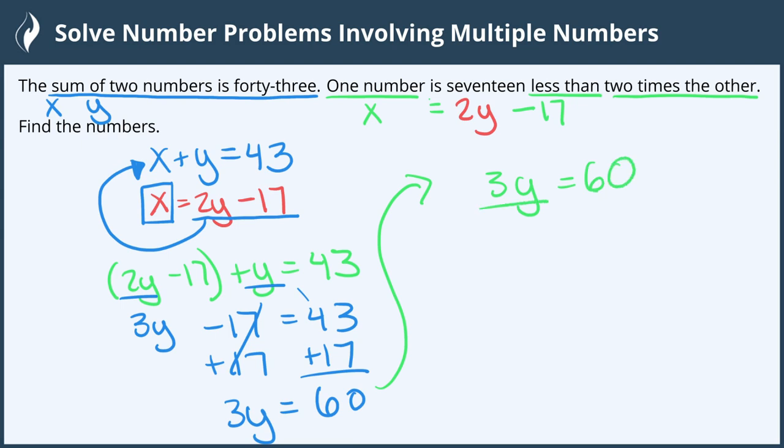3Y equals 60. Divide by 3, so Y equals 20. Now that's only one of the numbers, so we have to substitute it back into one of the original equations to solve for the other one.